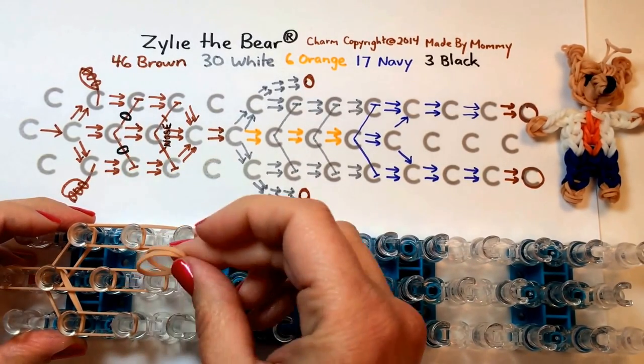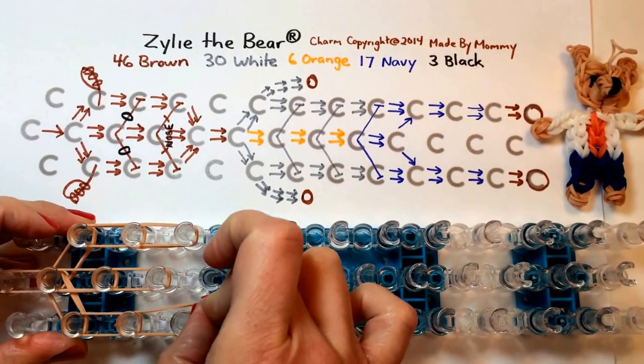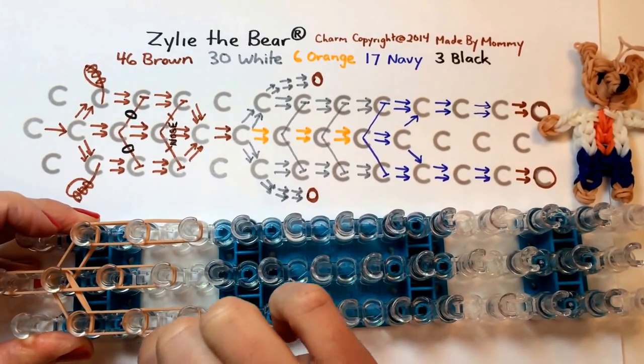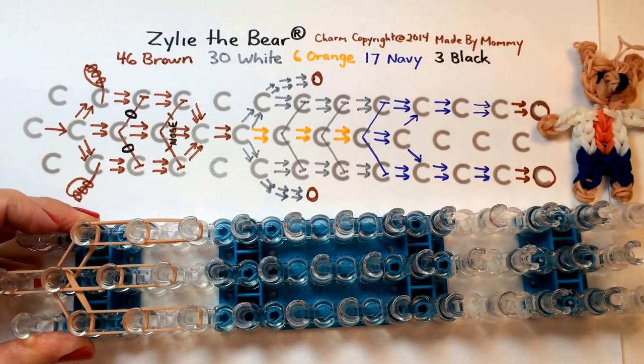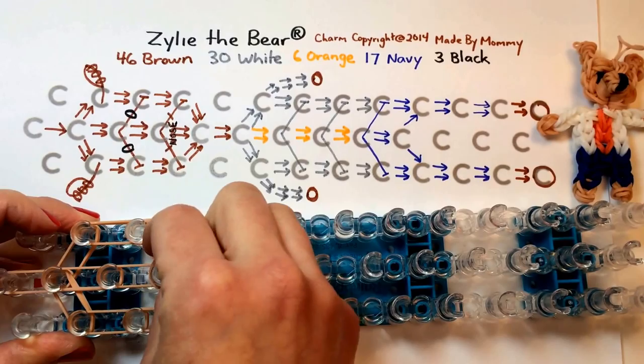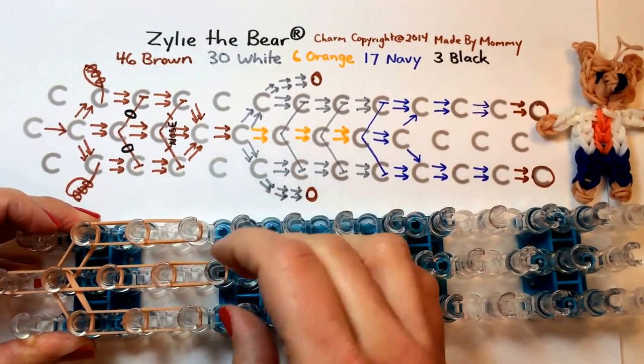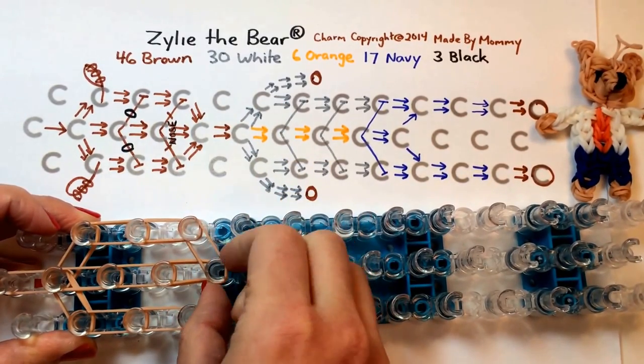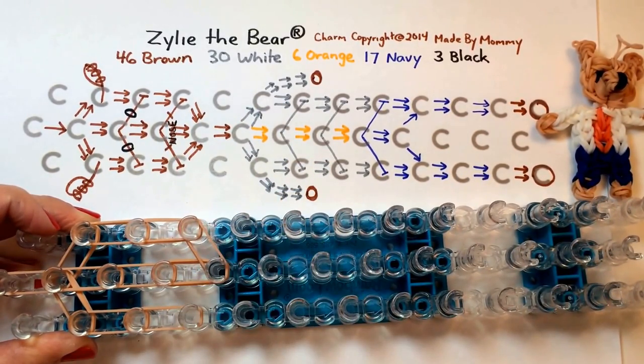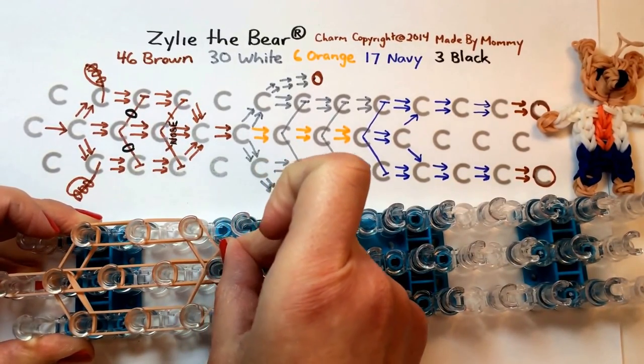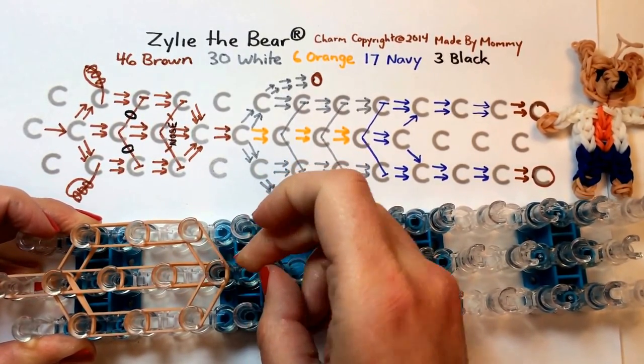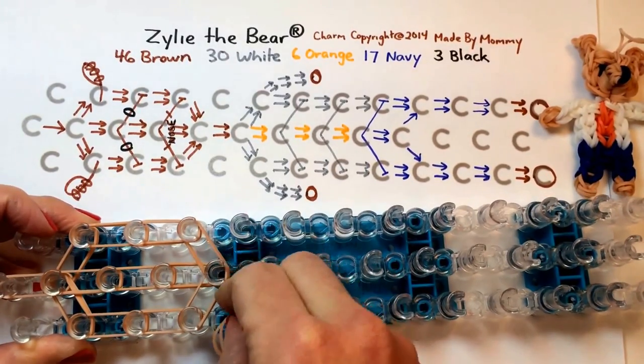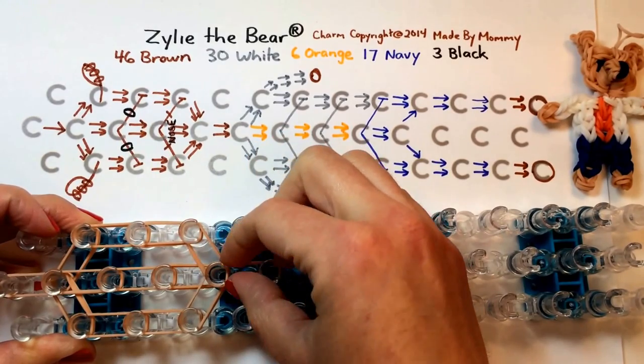So keep on putting two rubber bands at a time, trying as best you can not to get them twisted. This one we're going to go diagonal. This will be the bottom of Xylee's face.